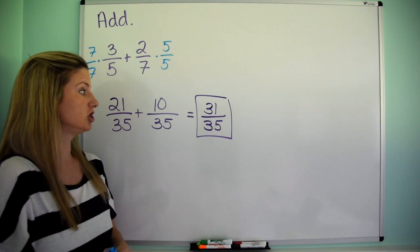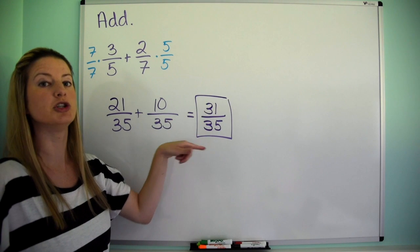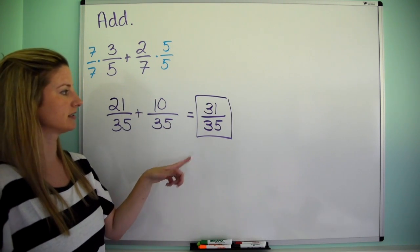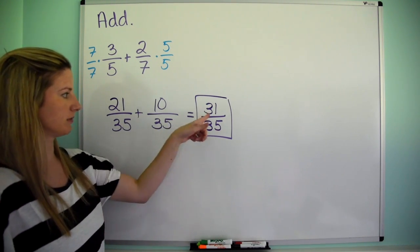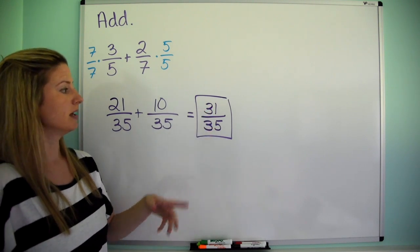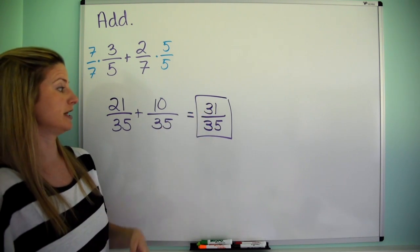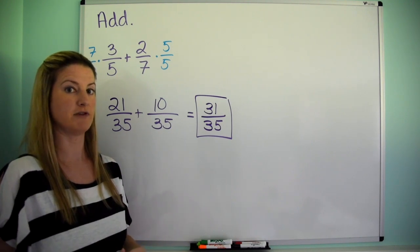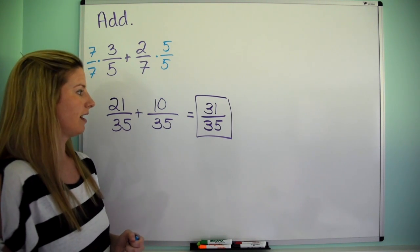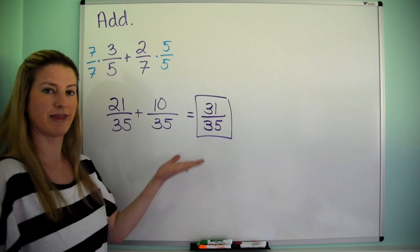Now, the one thing I am going to tell you is don't forget to check to see if you can reduce it. You can't for a couple reasons. Number one, 31 is prime, and number two, the numerator and denominator are relatively prime, which relatively prime means that they have no factors in common. So there you go.